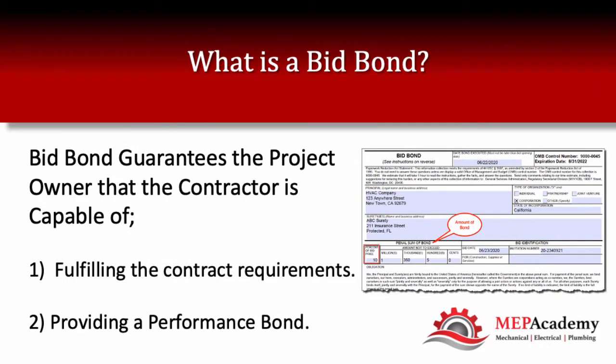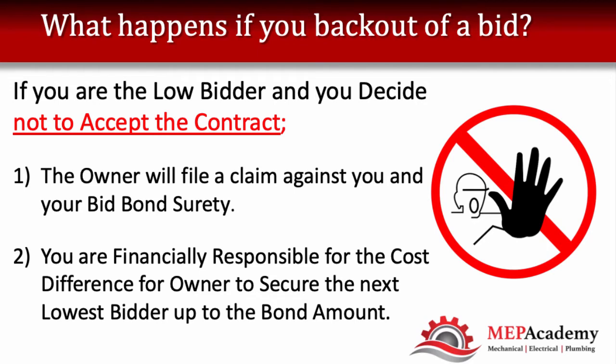What is a bid bond? Basically, when you're bidding a project that requires a bid bond, it's because the owner wants you to guarantee that you're capable of fulfilling the contract requirements and that you'll be able to secure a performance and payment bond. Usually a bid bond will roll into a performance bond. If you back out of a bid where you were the successful low bidder and a bid bond was issued on your behalf, the owner will file a claim against you and your surety company.